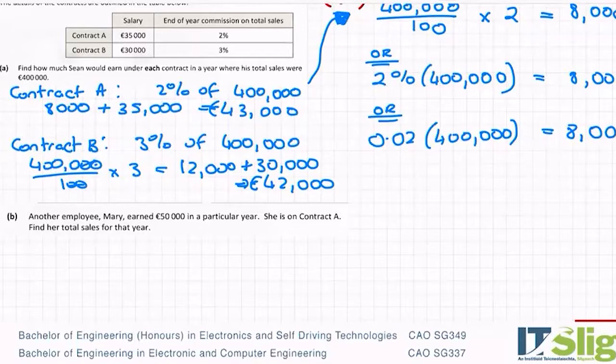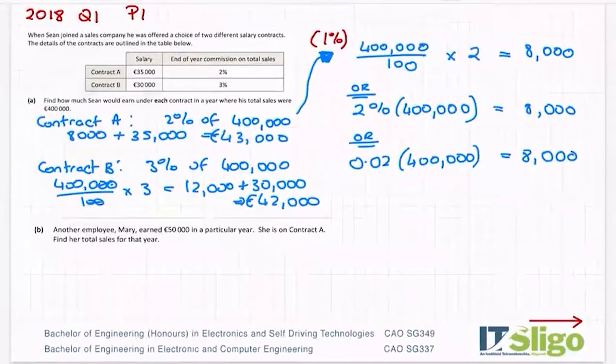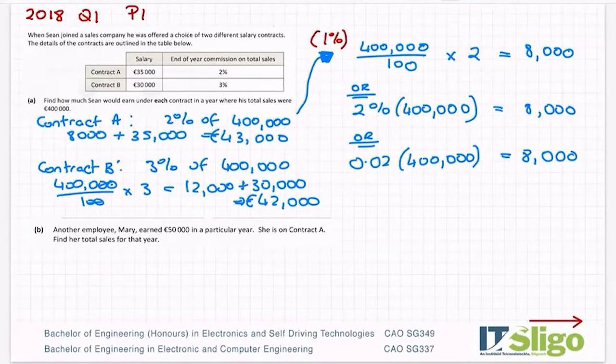Sometimes you get questions about which contract is better. Well, it very much depends on how much is the normal sales for a year. If normal sales for a year was 400,000, then you're better off on contract A. However, if normal sales for a year was maybe something like 800,000, well then you earn much more commission on contract B, so contract B would end up being a better one in that case. So that part A was worth 10 marks that year, which is nice.